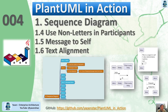Hello everyone, welcome back. In this video we put 1.4 to 1.6 all together because they are kind of closer in context. First is using non-letter characters in participant names. Second is sending a message to self. The third one is text alignment — by default it's aligned left, but we can define right or center alignment.